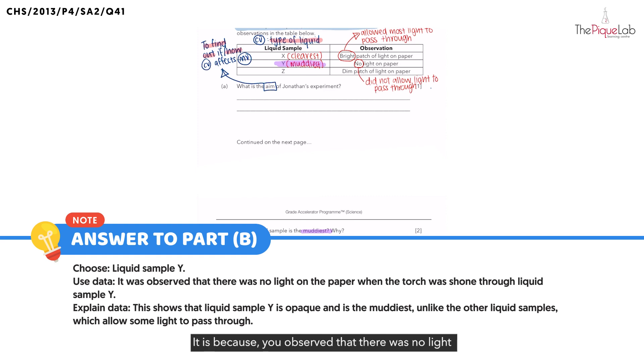It is because you observed that there was no light seen on the paper when the torch was shone through liquid sample Y. That is using the data. Finally, you explain, what does it mean when no light is seen?